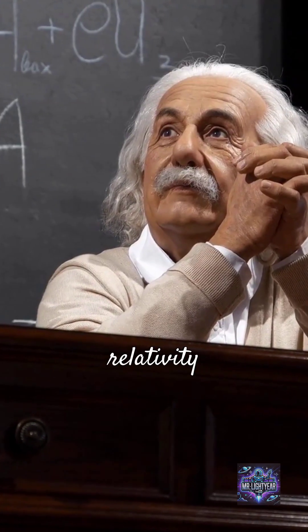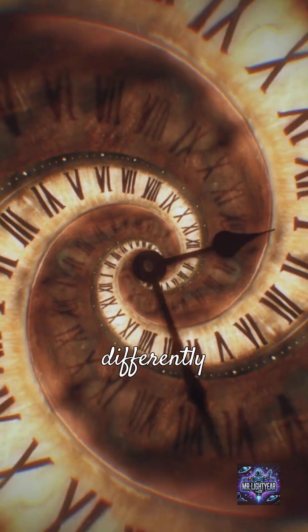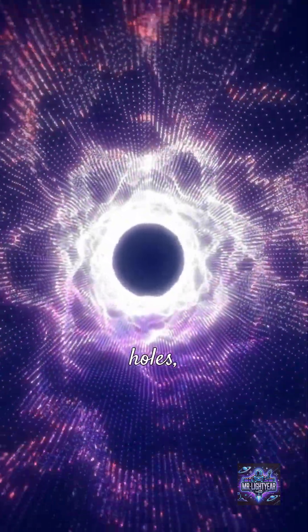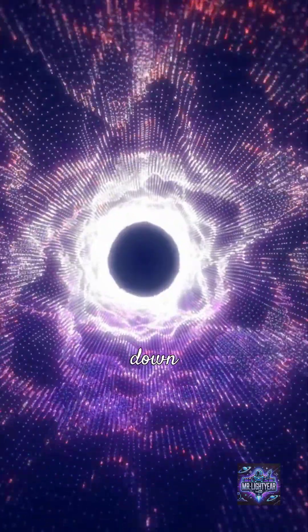Einstein's theory of relativity revealed that time flows differently depending on the curvature of space-time. Near massive objects like black holes, time slows down dramatically.